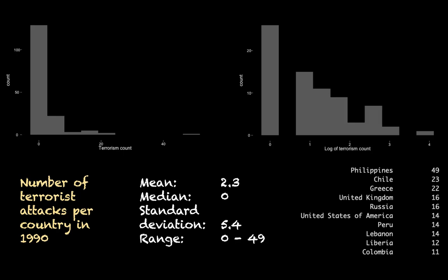Here we have some sample data — a pretty random dataset: the number of terrorist attacks per country in 1990. You can see some of the raw data on the right. The Philippines with 49 is the highest that year, Chile with 23 the second highest, Greece with 22, etc. The distribution is on the top left, and you can see there are very many cases with few terrorist attacks and then a few cases with higher numbers. The mean is 2.3, so on average just over two terrorist attacks per country in 1990. The median is zero, so more than half the cases have zero terrorist attacks. We also have the standard deviation and the range.